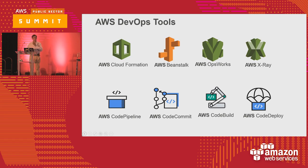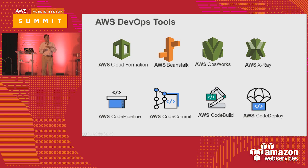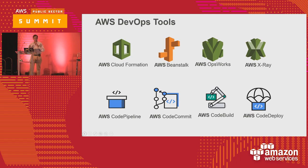We'll talk a bit more about OpsWorks. I'm not going to talk about X-Ray — this is a service you can use after your application is running to detect performance bottlenecks, issues, and problems. Essentially it puts some traces and creates logs, and the tool aggregates these logs to show you bottlenecks and issues before anyone else finds out.